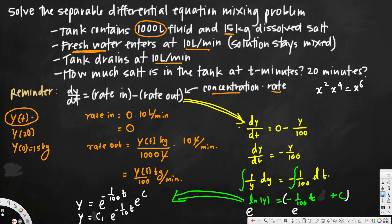So y(t) = C1 · e^(-t/100). Let me write this clearly because the previous version looked messy.